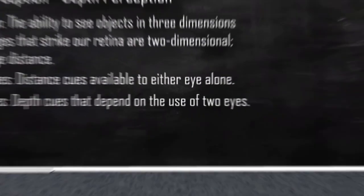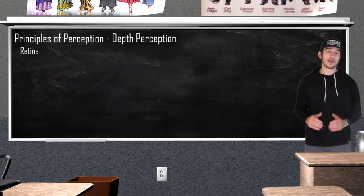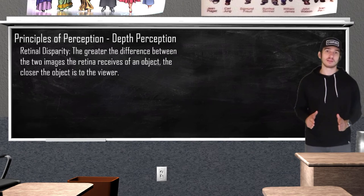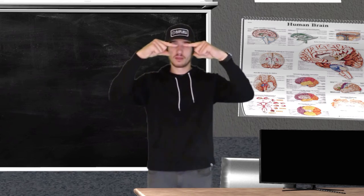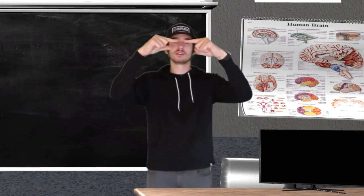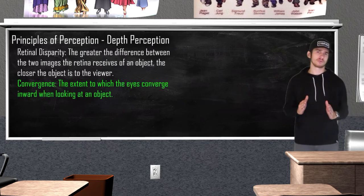Binocular cues are depth cues used by both eyes. Retinal disparity states that the greater the difference between two retinal images, the closer the object is to the viewer. This can be shown by holding two fingers up and staring — you see a little floating 'finger sausage' in the middle. Convergence refers to the extent to which our eyes converge, or eye muscles rotate, when looking at an object. The brain takes note of the angle of convergence while perceiving retinal images.